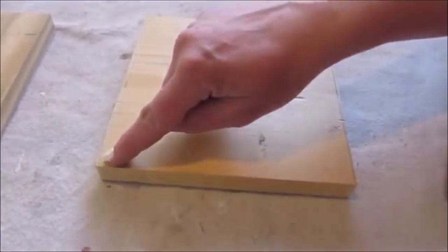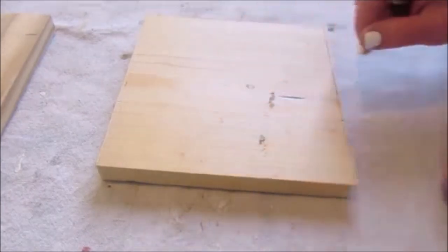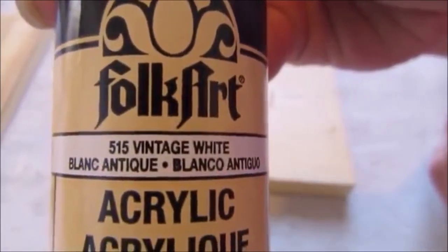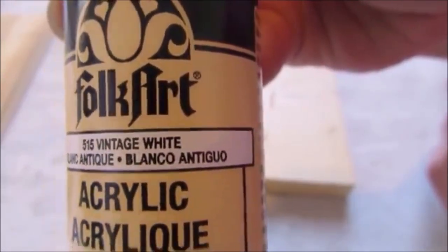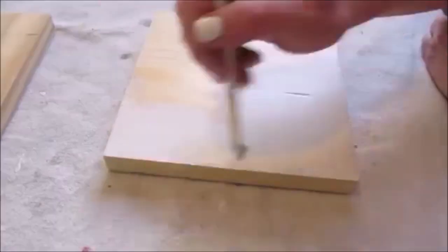To get started, I cut a one inch thick piece of lumber into an eight inch square. I then picked out a craft paint made by Folk Art in the color Vintage White. Then I quickly gave the lumber two coats of paint.